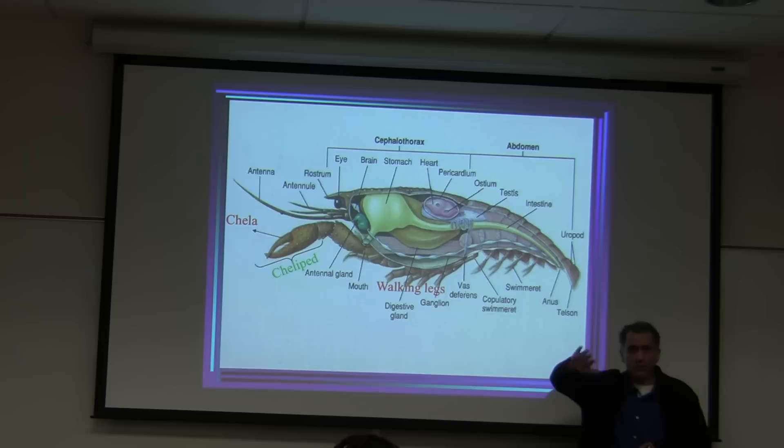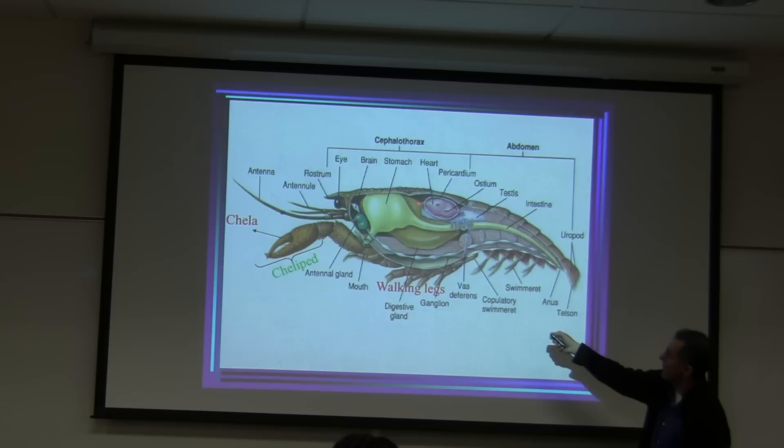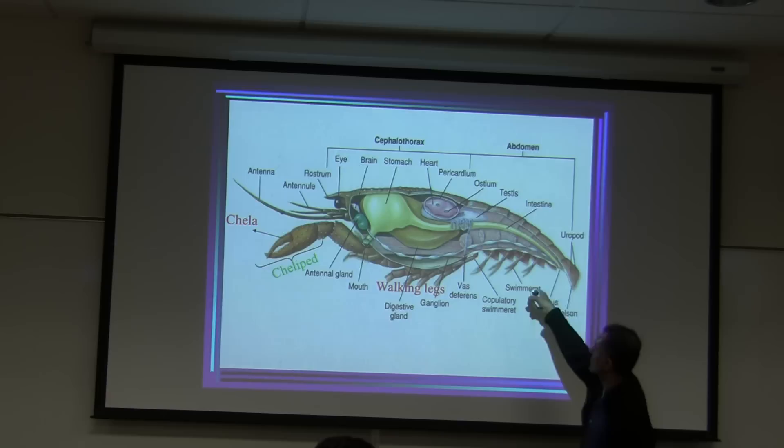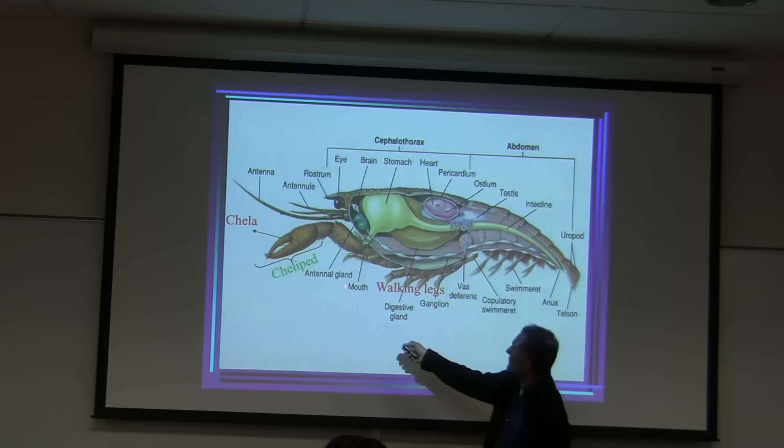The uropods act like the tail of an airplane, allowing the animals to move and steer. The heart is surrounded by a pericardium, and there is an open circulatory system, digestive system, and flexor and extensor muscles. When you eat the animal, you're eating those muscles. The green gland is also called the antennal gland.